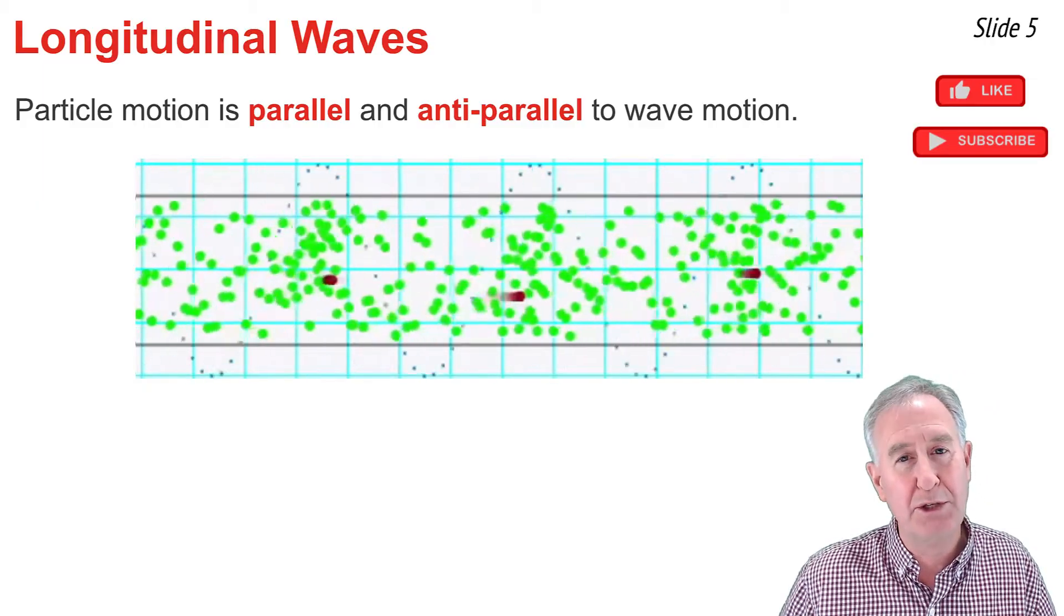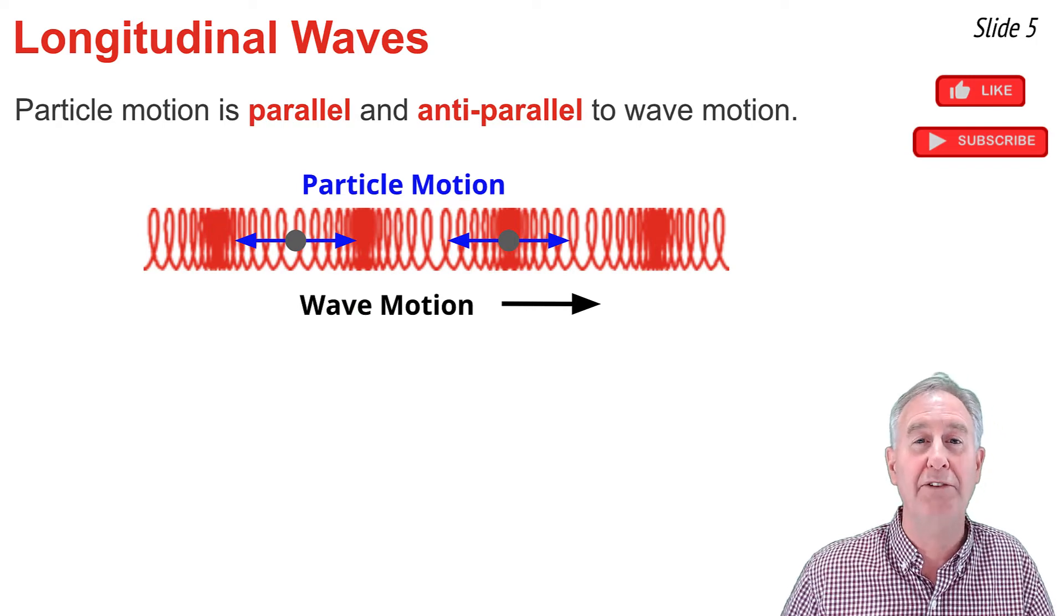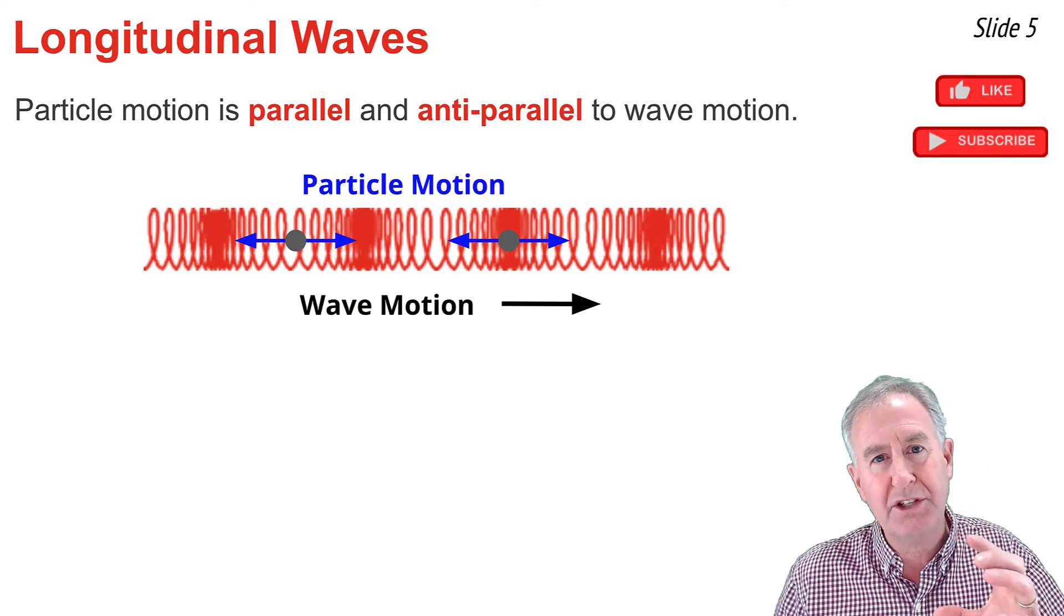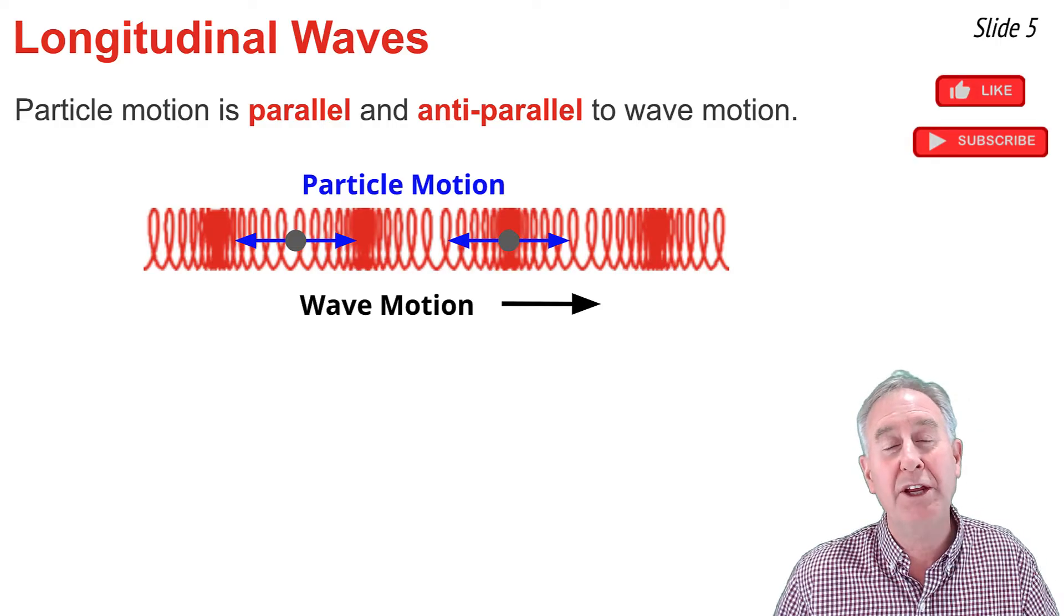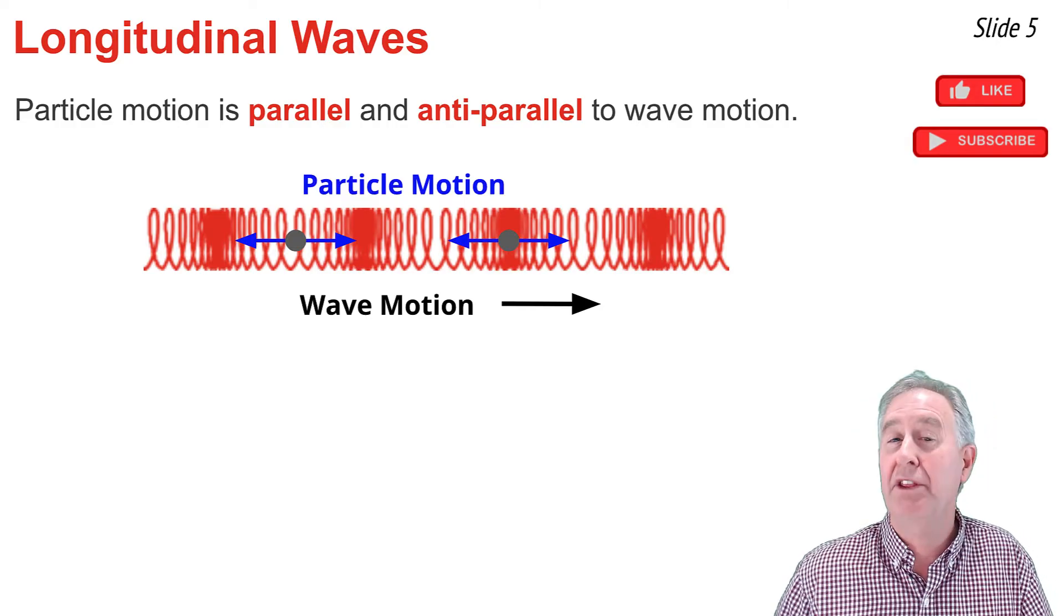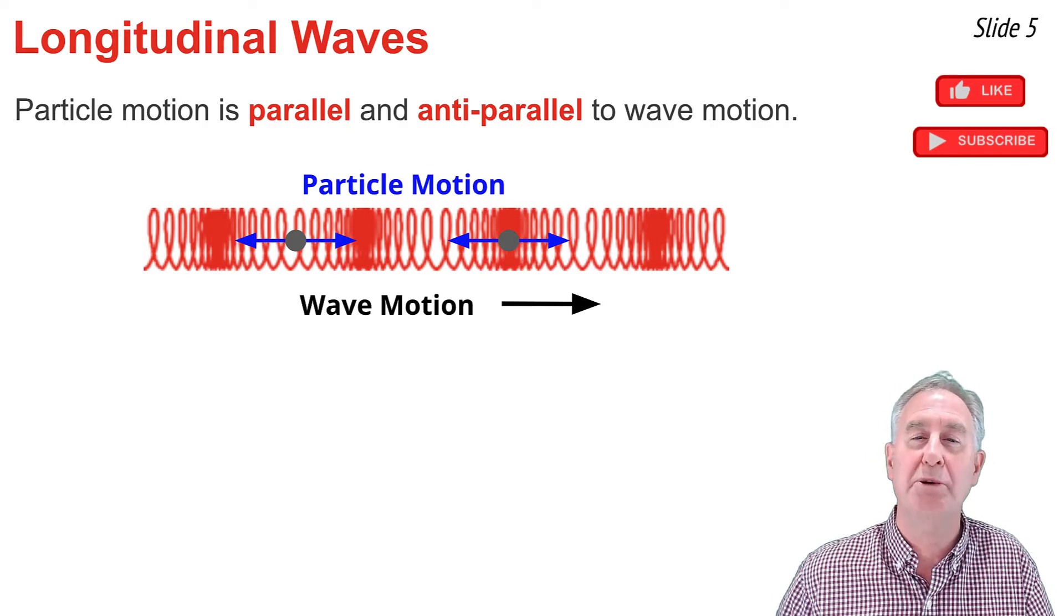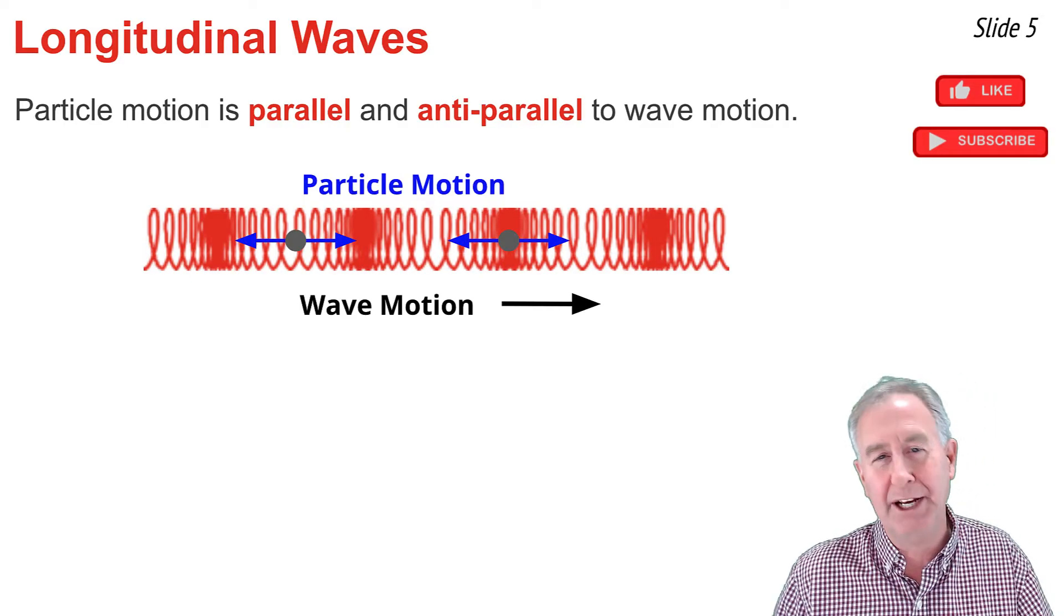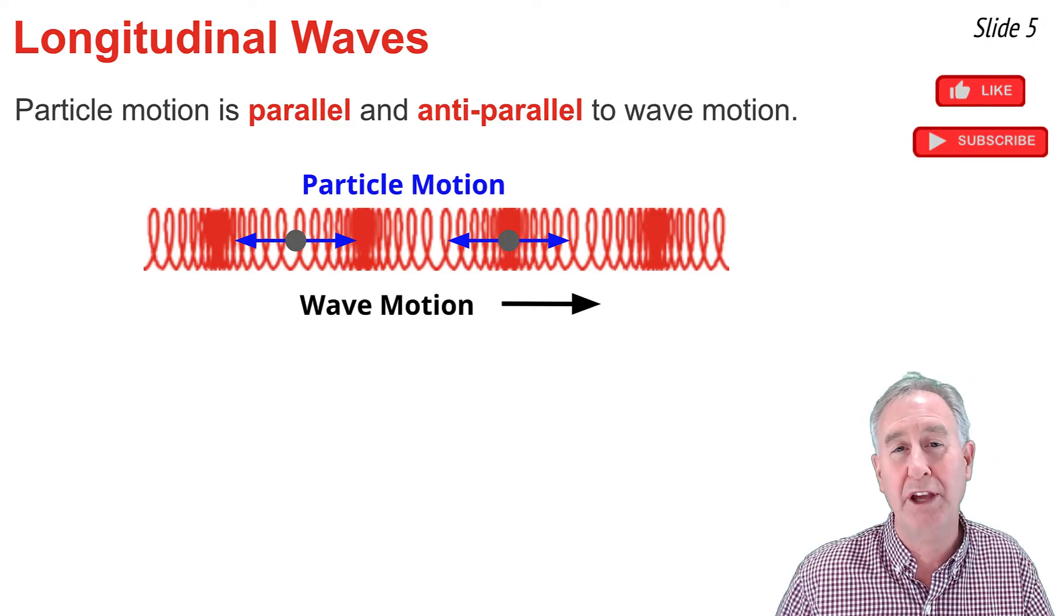If you had a slinky that was stretched out horizontally and you wish to introduce a longitudinal wave into it, you'd take the first coil of the slinky and push it forward and pull it back, moving it horizontally. Every coil within the slinky would vibrate back and forth horizontally as the wave moves from the left end of the slinky to the right end of the slinky. The particle motion is parallel to the direction of the wave motion.